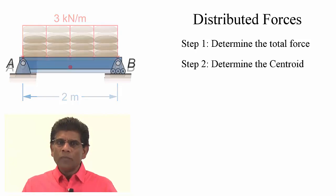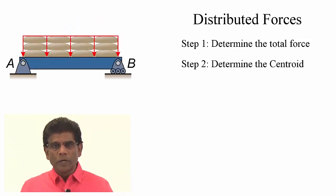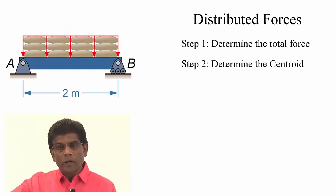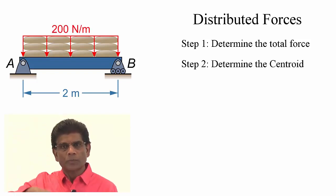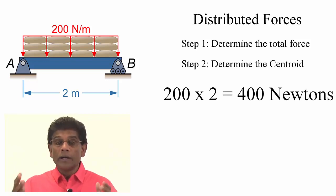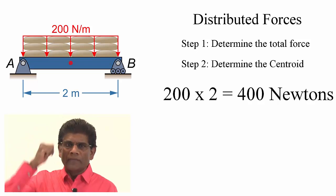Let's look at this example, where we have a uniformly distributed load on a 2 meter long beam. The intensity of the force is 200 newtons per meter. The area under the loading curve is the total force and it is equal to 200 times 2 equaling 400 newtons. The centroid of this area is right in the middle of the rectangle.